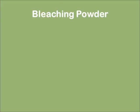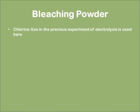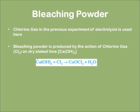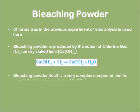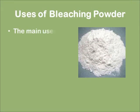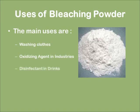Now let's learn about bleaching powder. The chlorine gas from the previous experiment of electrolysis is used here. Bleaching powder is produced by the action of chlorine gas on dry slaked lime. The reaction is given below. Bleaching powder is a very complex compound, but for simplicity it is represented as CaOCl2. The main uses of bleaching powder are: washing clothes, as an oxidizing agent in chemical industries, and as a disinfectant in drinking water.